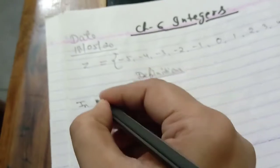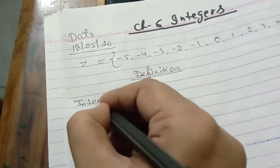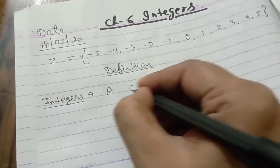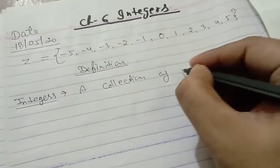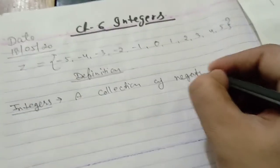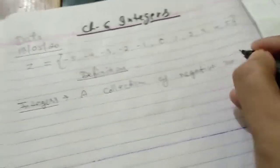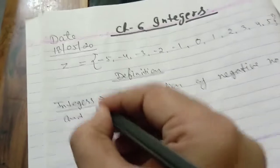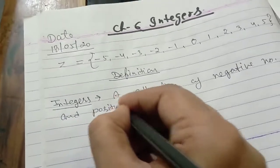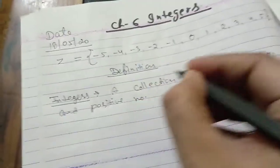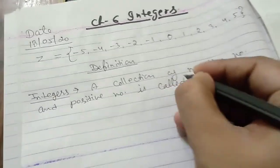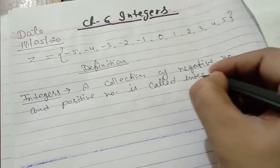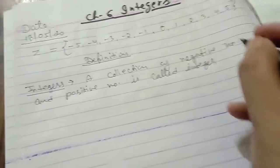Now I am going to write the definition. A collection of negative numbers and positive numbers is called integers.